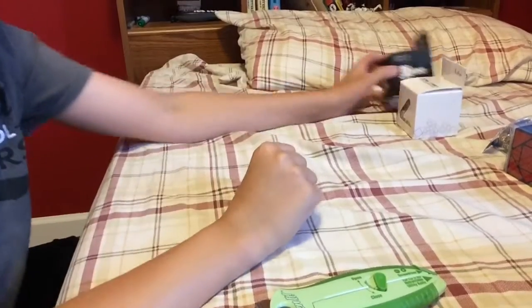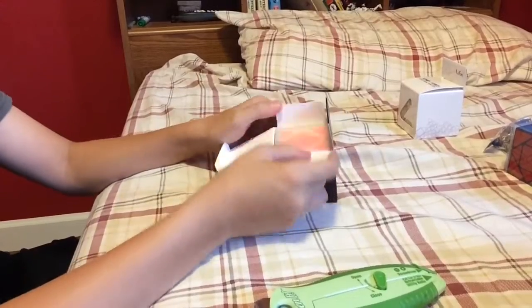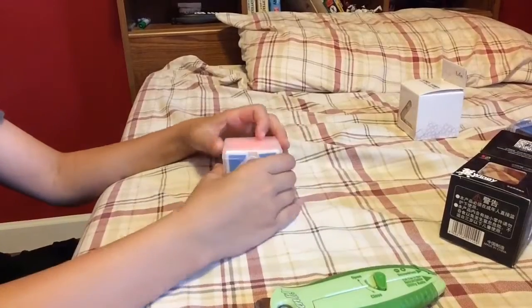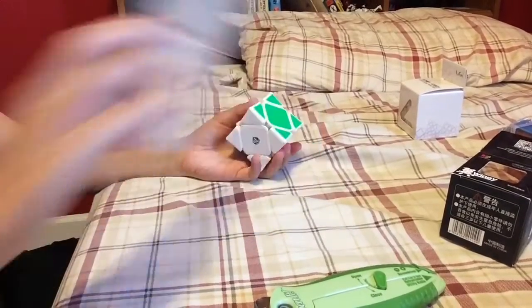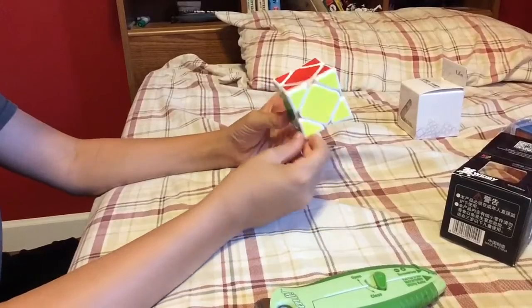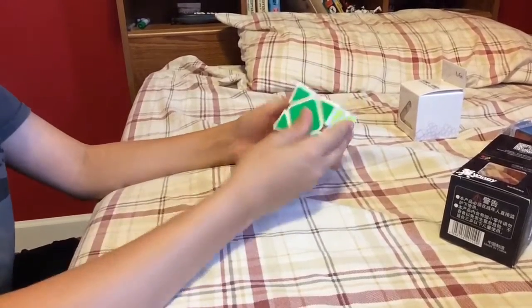Next up is another speed cube and another cube I'm going to do a review on. The X-Man Wingy. This is cool. It comes with a pamphlet. I like the box. And this is actually concave. If you couldn't tell, it's kind of hard to tell at this camera angle, but it is concave. Let's get into the first turns.